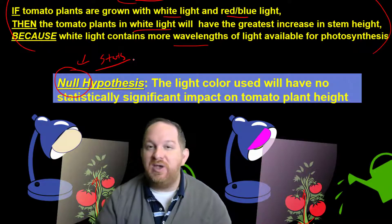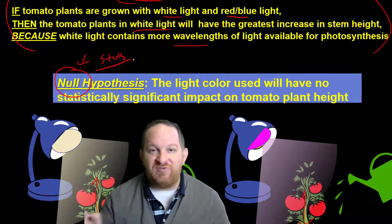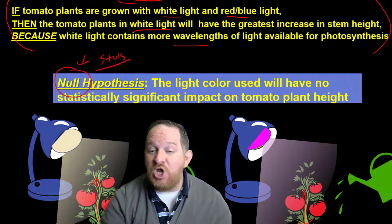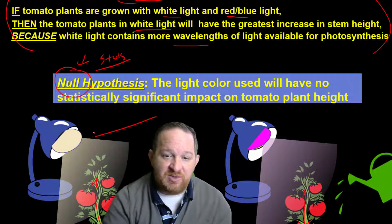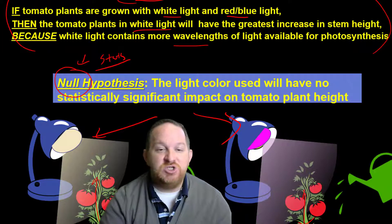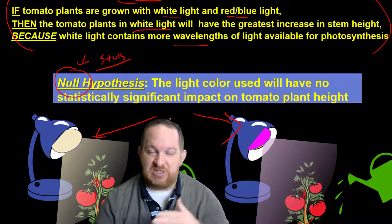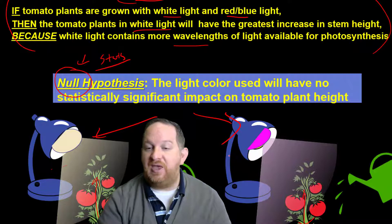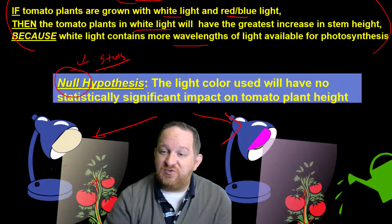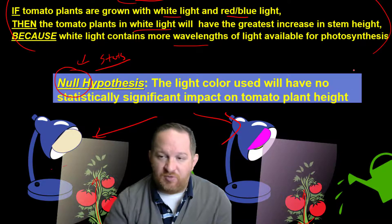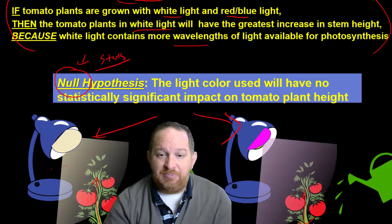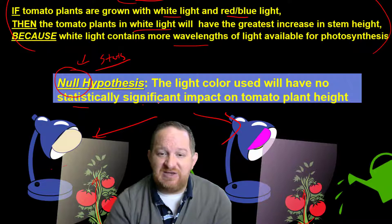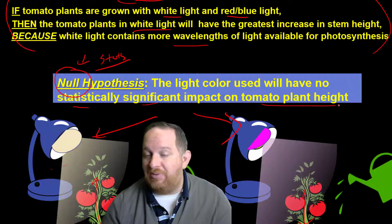As scientists, we kind of got to go in, we got to get rid of our bias. We got to just go in assuming that there will be no statistical difference between this one and this one. So any good null hypothesis is just going to start with, there's no significant difference in the growth between this and this. So I've sort of put the formula here for it. In this example, the light color used will have no statistically significant impact on the tomato plant height.